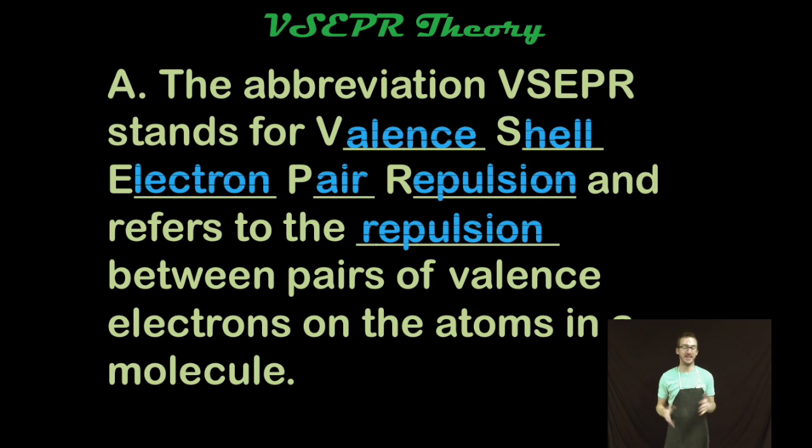Okay, so commonly in class you're gonna hear me say VSEPR theory. That abbreviation VSEPR stands for valence shell electron pair repulsion, and it simply refers to the fact that there is repulsion between pairs of valence electrons on the atoms in a molecule. Like charges don't like hanging out by one another, so they are going to repel or push one another away.